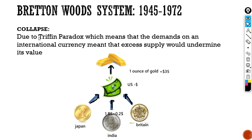However, due to the Triffin Paradox, the system started to shake and was near collapse. The Triffin Paradox means that the demand for an international currency meant that excess supply would undermine its value. Since all currencies were pegged to the US dollar, and only the dollar was pegged to gold, any country wanting gold had to convert to USD first. This caused the demand for USD to increase significantly.